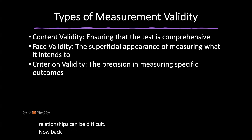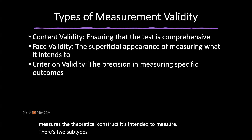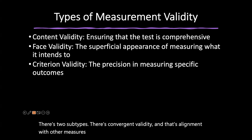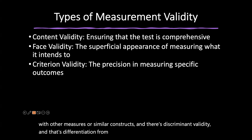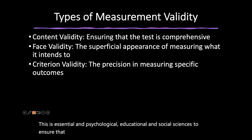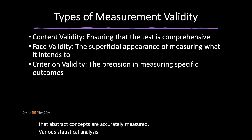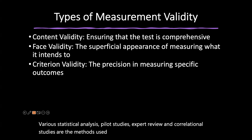Returning to construct validity — this examines how well a test measures the theoretical construct it's intended to measure. Its two subtypes are convergent validity, which is alignment with other measures of similar constructs, and discriminant validity, which is differentiation from measures of distinct constructs. This is essential in psychological, educational, and social sciences to ensure that abstract concepts are accurately measured. Various statistical analyses, pilot studies, expert review, and correlational studies are used to assess construct validity.